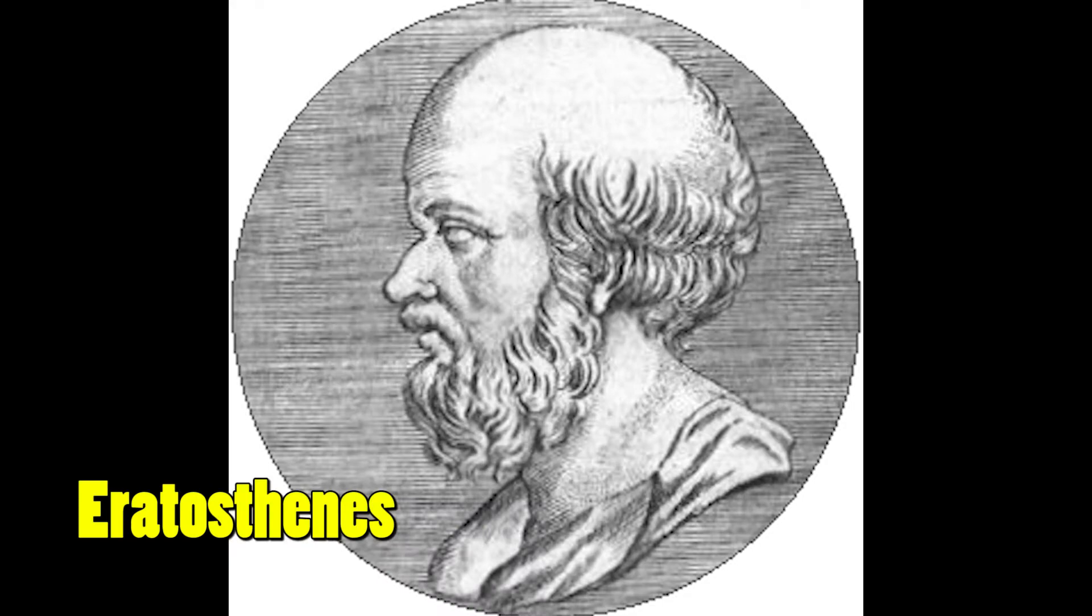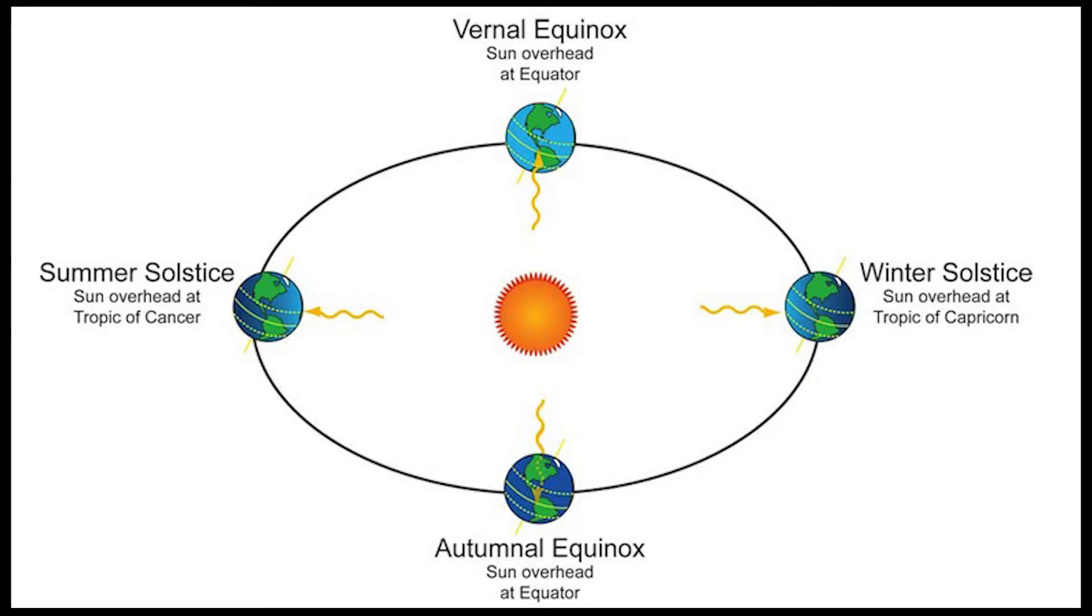Eratosthenes of Syene was a Greek mathematician, astronomer, and he was the chief librarian in the library of Alexandria. So this is his experiment. He had noticed that on the summer solstice, that's when the Sun is directly overhead of the Tropic of Cancer, he noticed that in Syene, that was his home city, he couldn't see a shadow of the objects as the Sun was directly overhead.